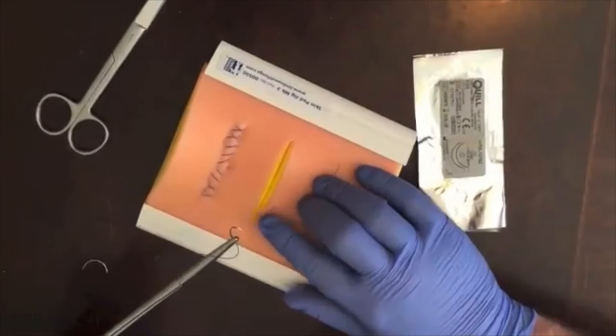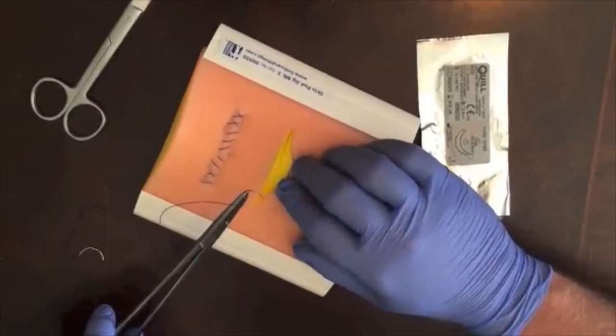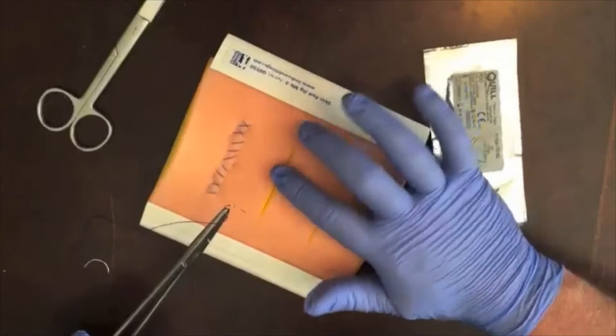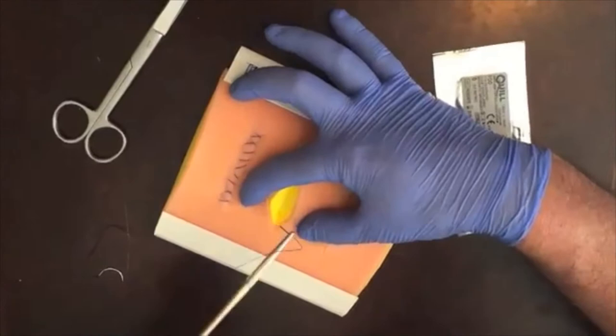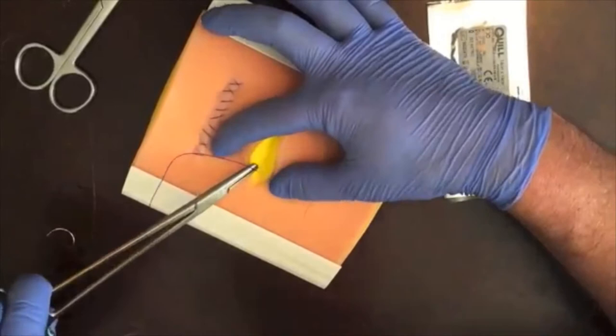In this demonstration, I will show you how to perform a dual layer closure starting at the apex of the incision. The yellow foam on our skin pad represents the deep tissue layer. We'll begin by taking our quill bidirectional thread and making our first throw into the apex of the incision.